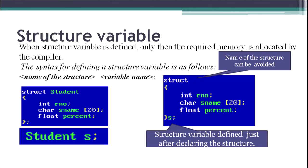When we declare a structure, memory is not allocated to it. Just as we write 'int a' to declare an integer variable, for a structure we need to create a structure variable. The syntax is: write the structure name followed by the variable name. Here we have declared a structure variable s of type student. In the second example, the structure name has been omitted because the structure variable has been defined immediately after declaring the structure.